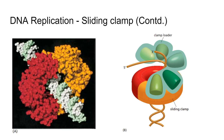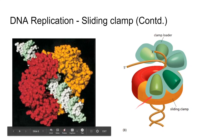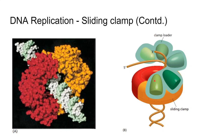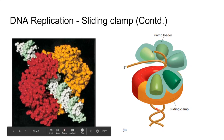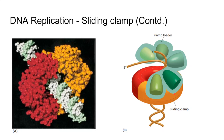To repeat: the clamp loader rotates — like a nut on a bolt — along the single strand. It can only rotate upon a single strand; once it reaches a double-stranded region it stops. Once the double-stranded region is reached, the clamp loader hydrolyzes ATP and leaves, and then the polymerase comes in to synthesize a new strand.